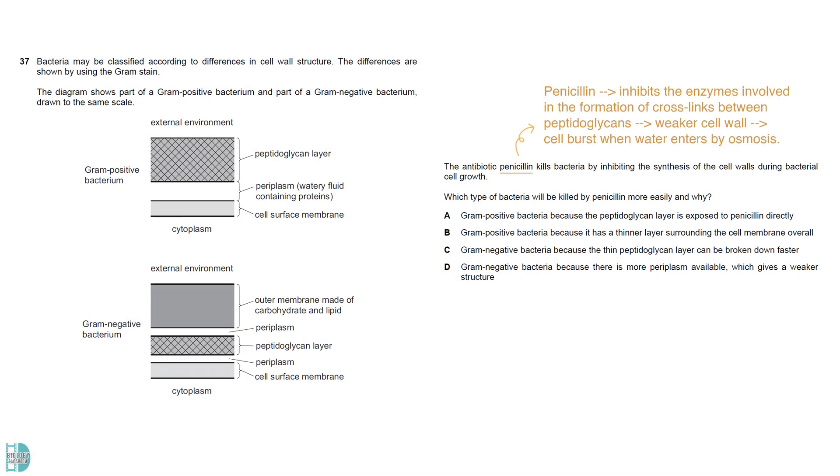Penicillin works by inhibiting the enzymes involved in the formation of cross-links between peptidoglycans, the main component of bacterial cell wall. This causes a weaker cell wall, leading to cell burst when water enters by osmosis. A is correct. Without an outer membrane, it is easier for penicillin to affect the cell wall of gram-positive bacteria. B is wrong because gram-positive bacteria have thicker peptidoglycan cell walls.